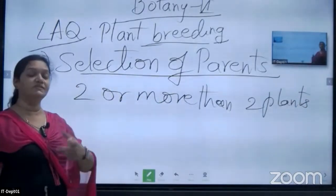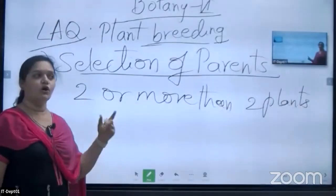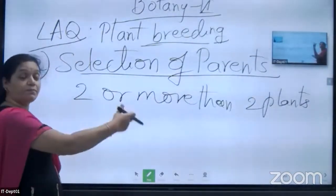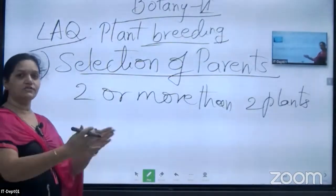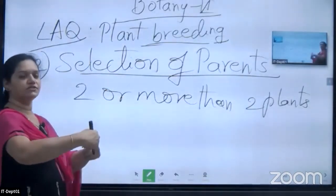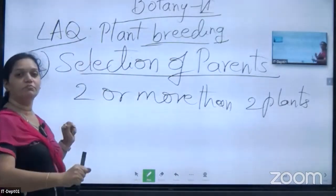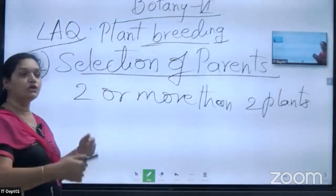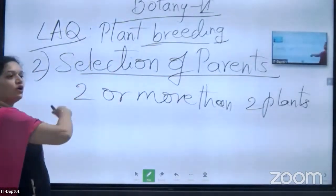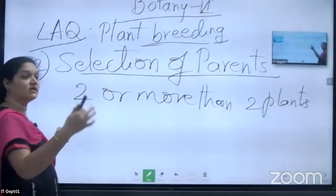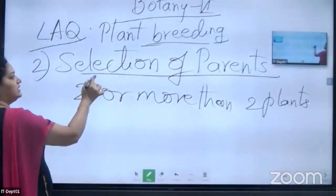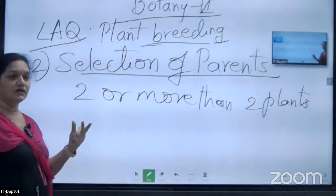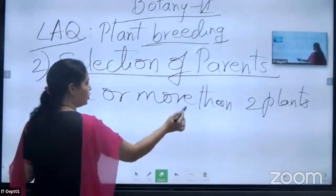Two or more than two plants will be selected as parents, because all desired characters may not be present in one single plant. By crossing all these parents, we will get one single plant with all our desired characters. All of this process is for our benefit — we want many things from one single plant. So that is the selection of parents — two or more plants with desired qualities.